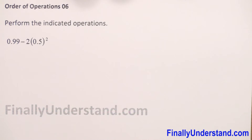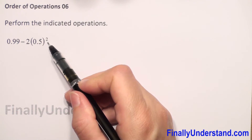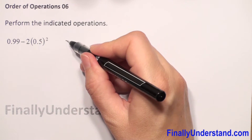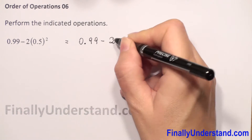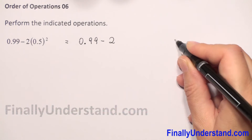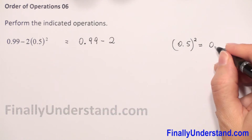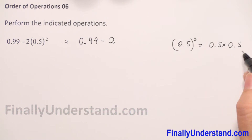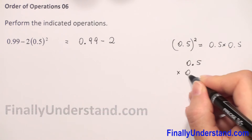In the parentheses we have only 0.5, so there is no operation inside. Next we have an exponent, so we have to raise 0.5 to the second power. So we have 0.99 minus 2 times 0.5 to the second power, which equals 0.5 times 0.5.